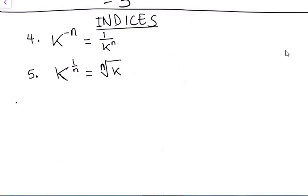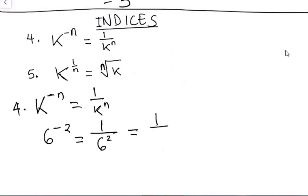I'm going to take some example for the fourth law. We have k raised to power minus n equals to 1 over k raised to power n. And our first example will be 6 raised to power minus 2. What we are saying is the reciprocal will be 6 raised to power 2. And that will be 1 over 6 times 6. And that will give us 1 over 36.